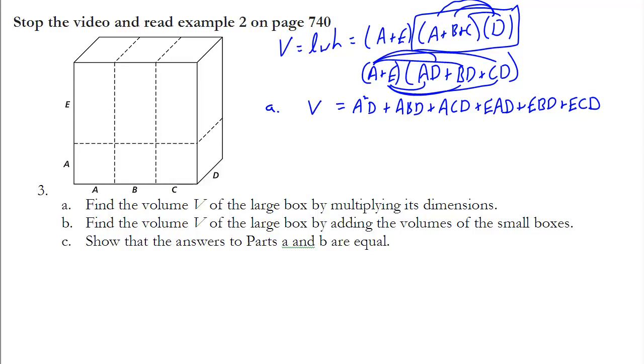Part b asks us to find the volume in a little different way. It says find the volume of each of the little boxes and add them together. Well, there are six little boxes on the bottom. I can find each one of those. So this one right here would be a times a times d or a²d. This one here would be a times b times d, which would be abd. And this one right here, a times c times d.